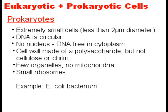Prokaryotes are extremely small cells, less than two micrometers in diameter. Their DNA is circular. They have no nucleus — the DNA is free in the cytoplasm. The cell wall is made of a polysaccharide, but not cellulose or chitin. They have few organelles, no mitochondria, and have small ribosomes. An example of a prokaryote would be E. coli, a bacterium.